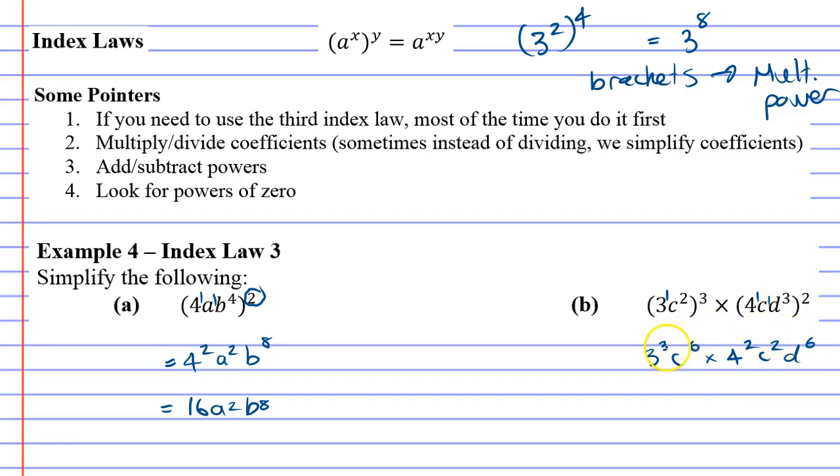Now we've basically worked on the brackets. Question B is tricky because it has a multiplication between them, and essentially what we're doing after using index law 3 is going back to focus on index law 1.